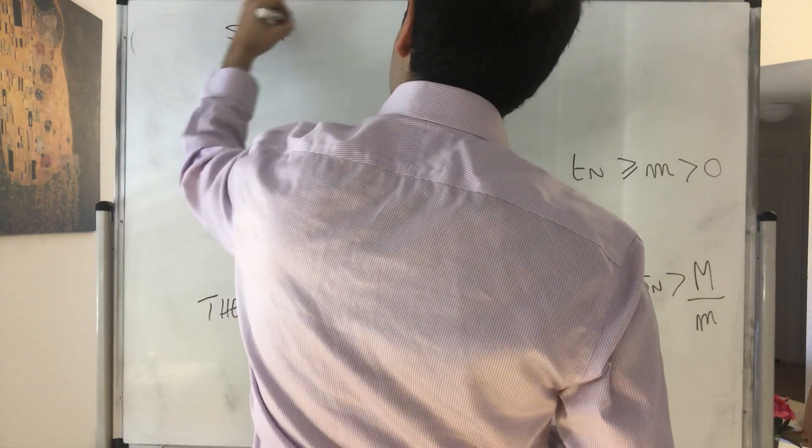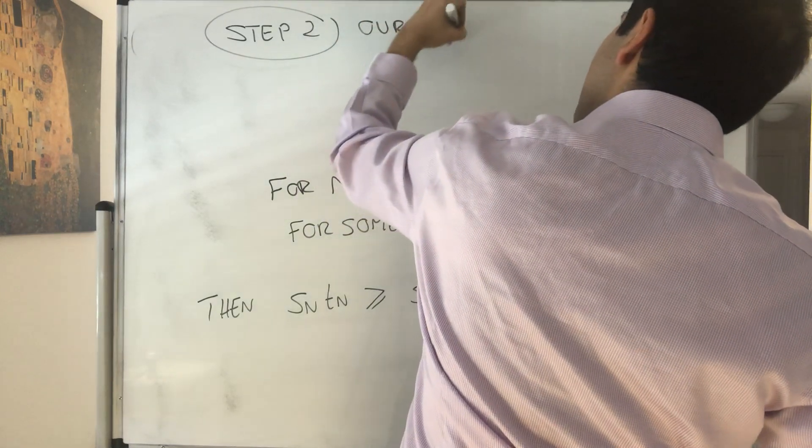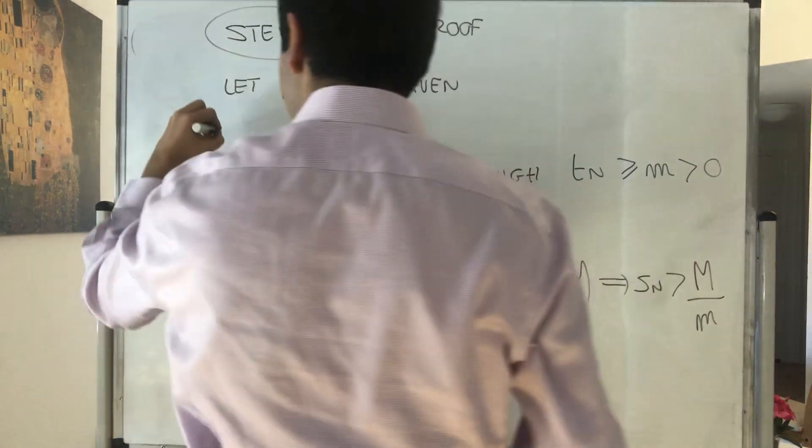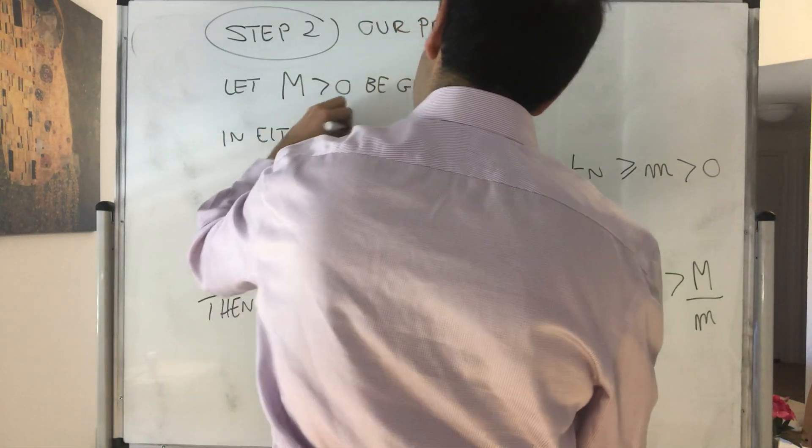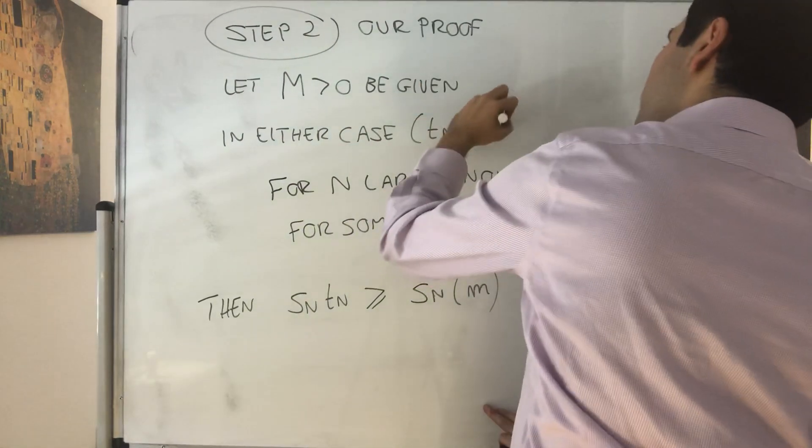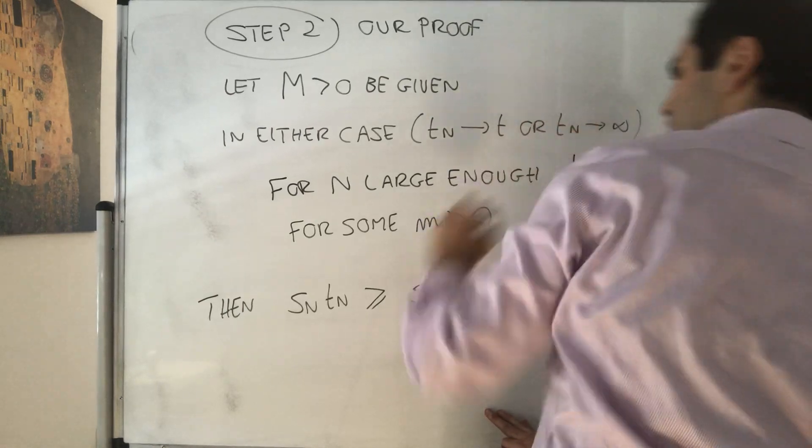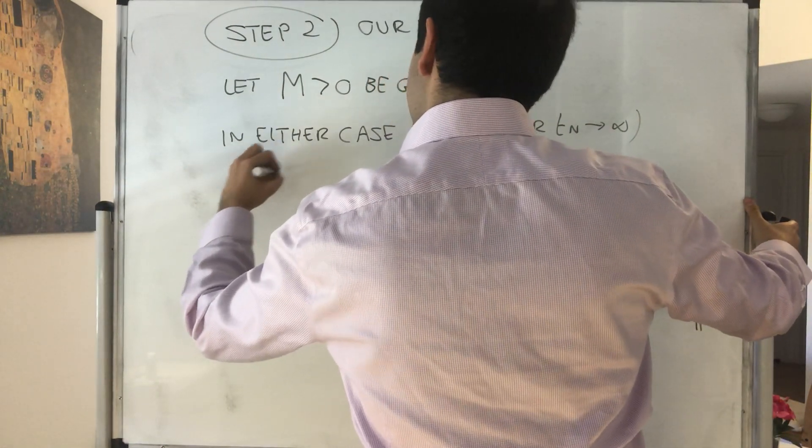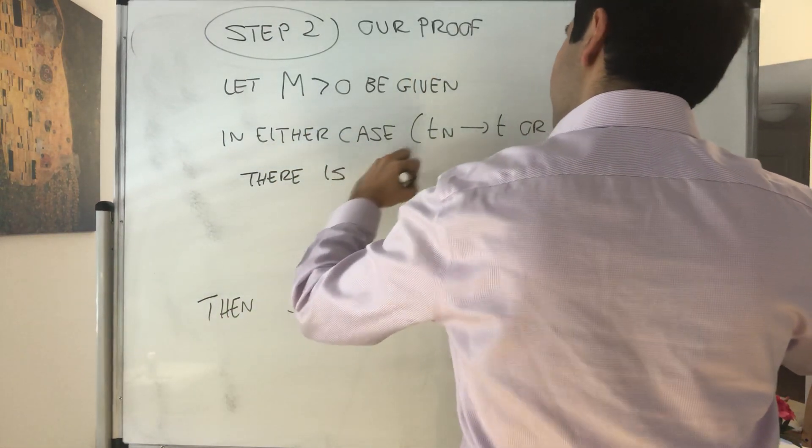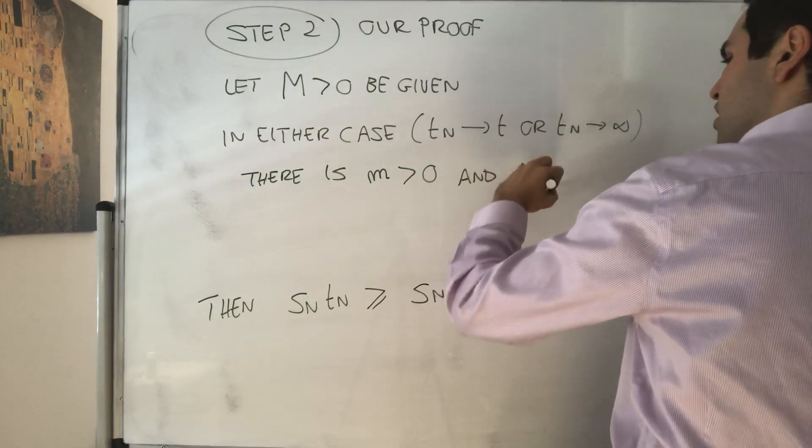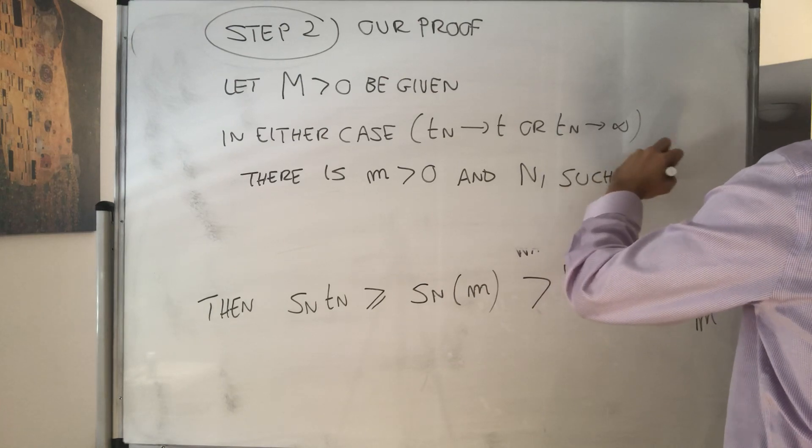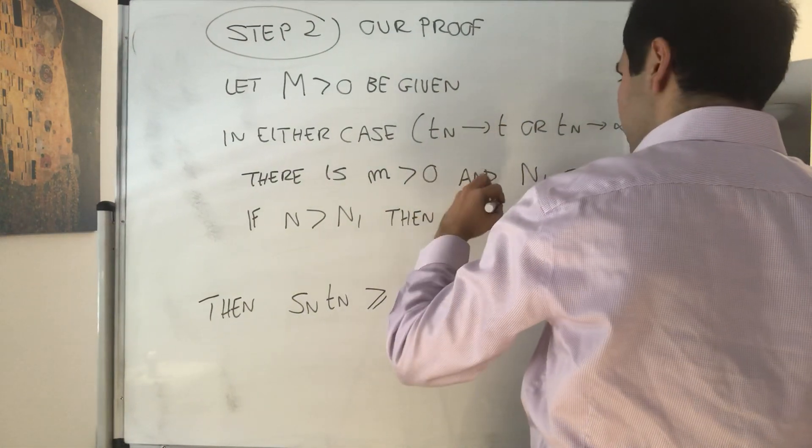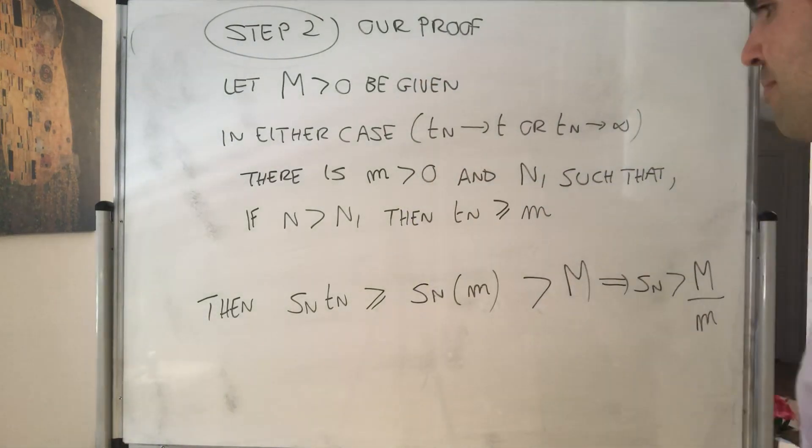So, step two. Our proof. So, let capital M be given. In either case, either Tn goes to T, or Tn goes to infinity, we know that, for n large enough, there is Tn, first of all, a positive constant m, and some n1, such that, if n is bigger than n1, then Tn is greater or equal to m.